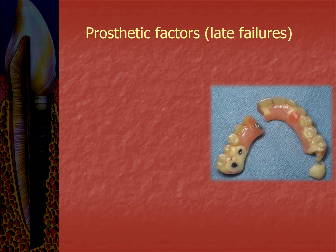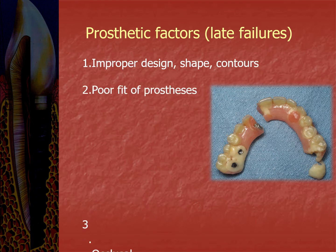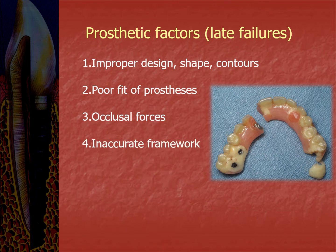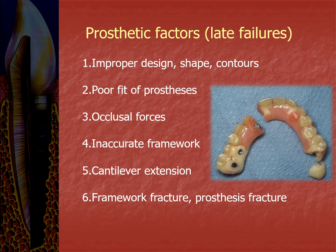Prosthetic factors that lead to late failures include: improper design, shape, and contours; poor fit of prosthesis; abnormal occlusal forces or occlusal overloading; inaccurate framework; cantilever extension; framework fracture; prosthesis fracture; and functional problems like speech.